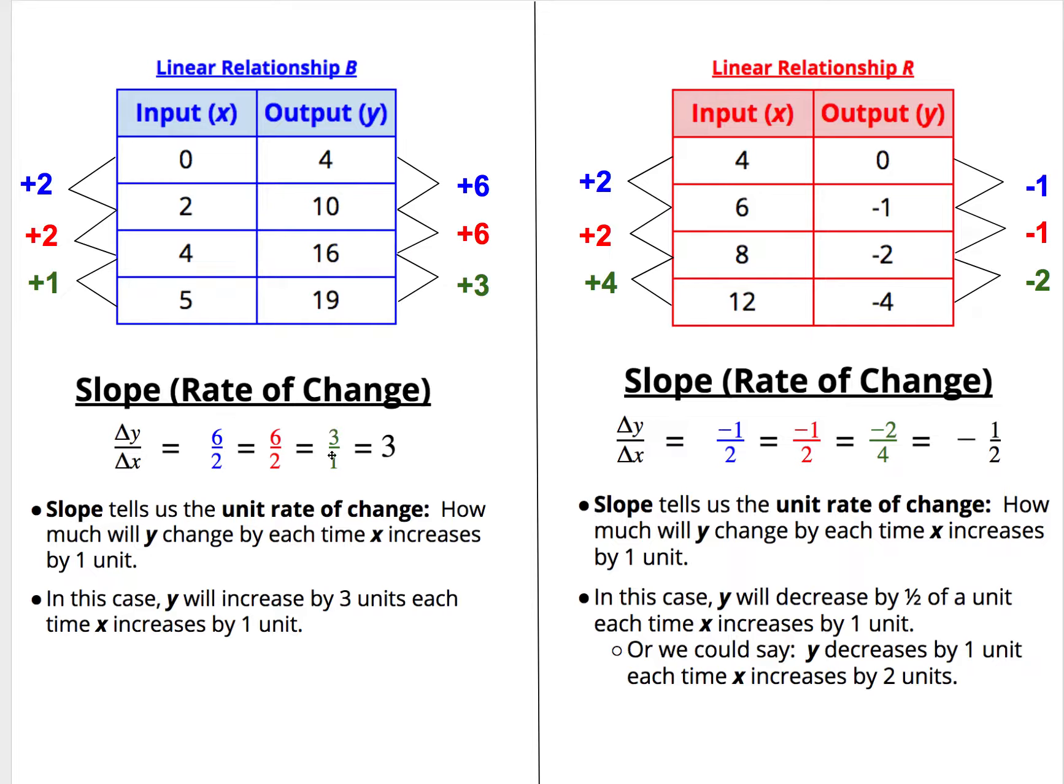What we see for each one of these ratios is that they all create the same slope, or like every linear relationship, we have a constant rate of change. That slope is three, or three over one, and it tells us that y will increase by three units each time the x increases by one unit.